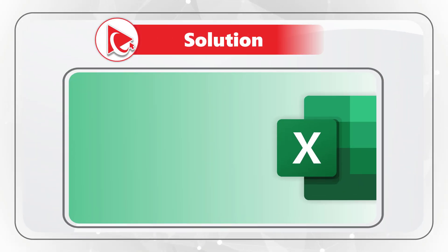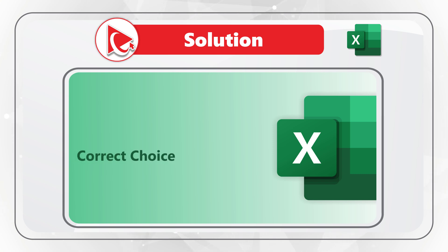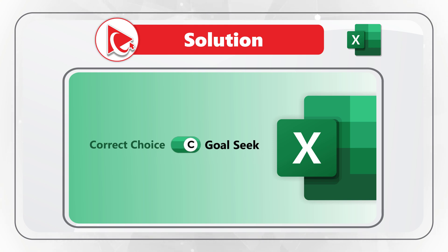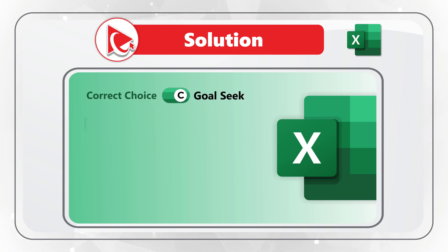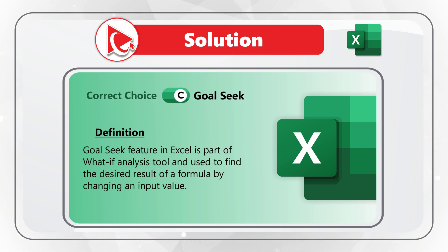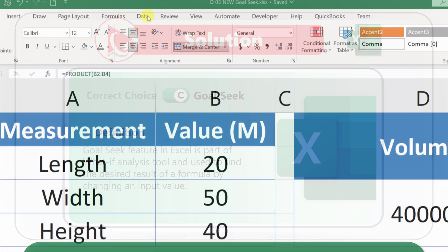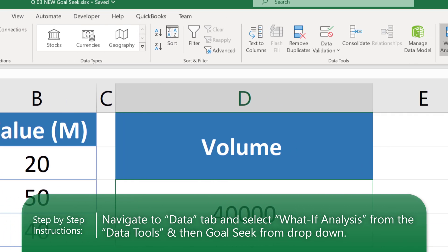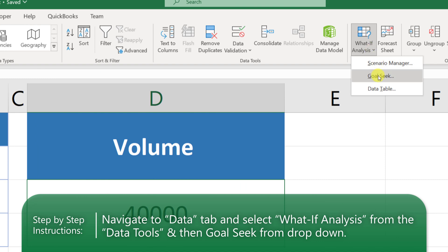I believe the best way to solve this challenge is to use the Goal Seek feature of Microsoft Excel. Goal Seek is a part of the what-if analysis tool and is used to find the desired result of a formula by changing the input value. Goal Seek can be accessed on the Data tab in the Forecast section of the Excel ribbon, under the What-If Analysis button.